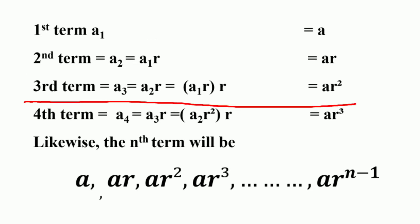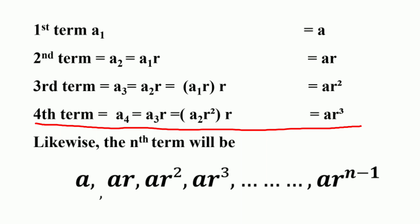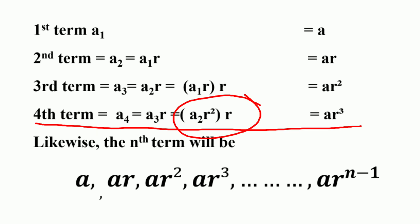Similarly, the third term is obtained by multiplying the second term by the common ratio R. So A3 equals A2 times R, which equals A1·R times R, which equals AR². The fourth term is obtained by multiplying the third term by the common ratio R, so A4 equals A3 times R, which equals AR²·R, which equals AR³.